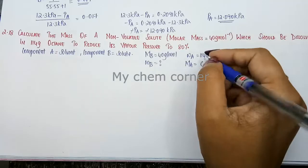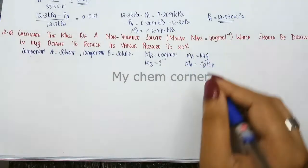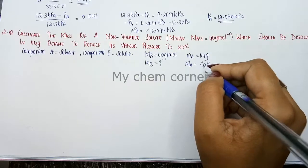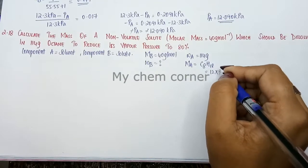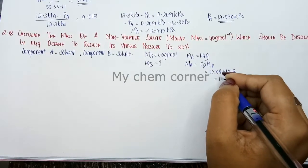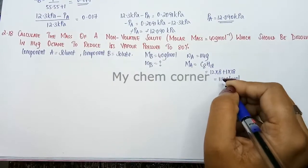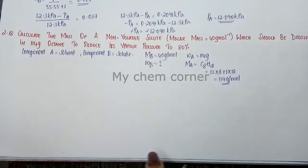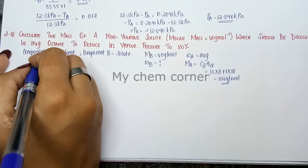Now when you simplify this, 12×8 + 1×18, you will get 114 gram per mole, which is the molar mass of octane. So you got these values. Let's write down the formula - relative lowering of vapor pressure.